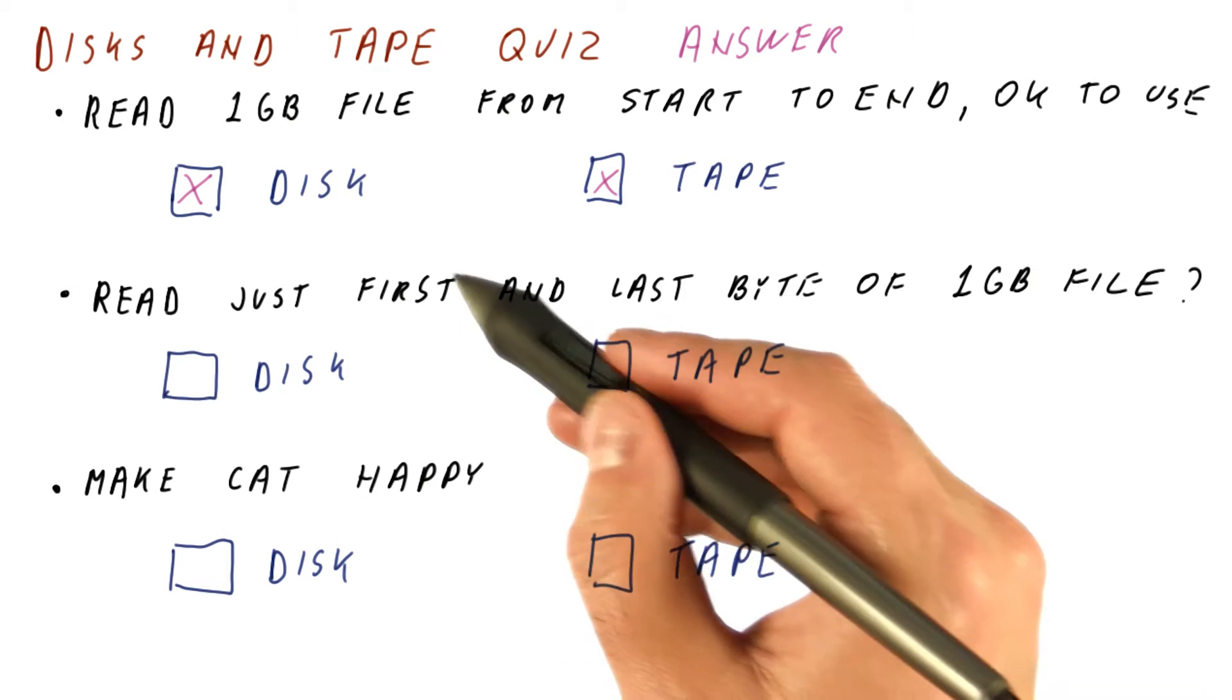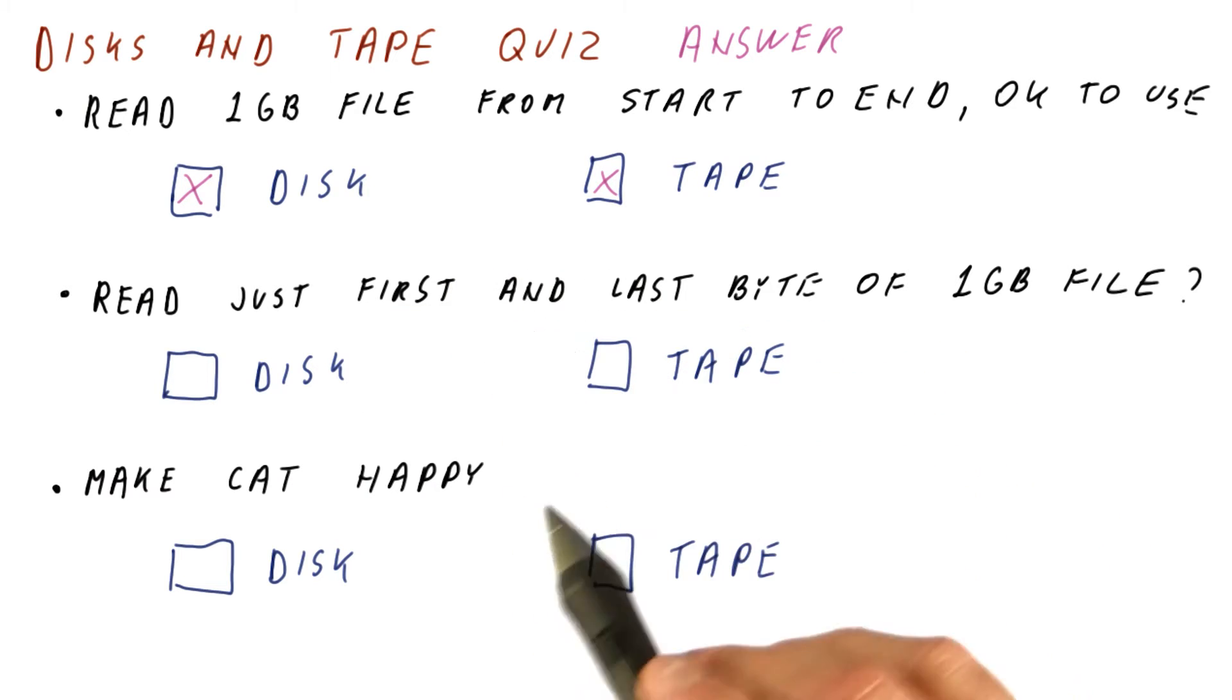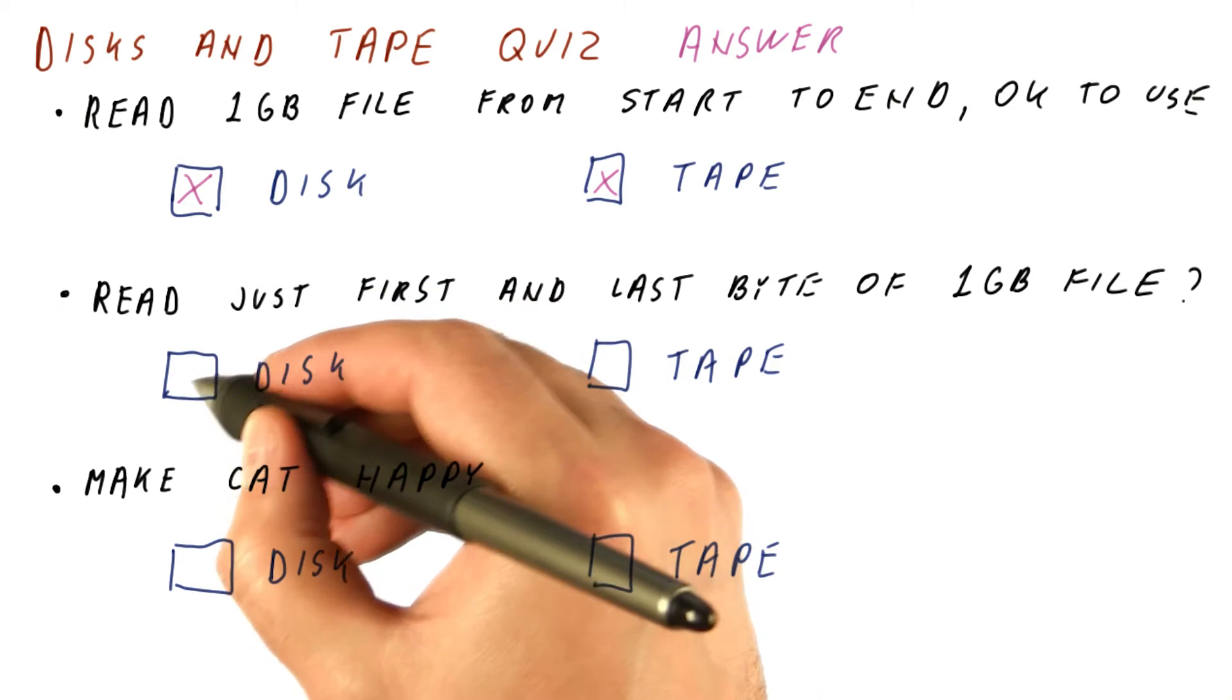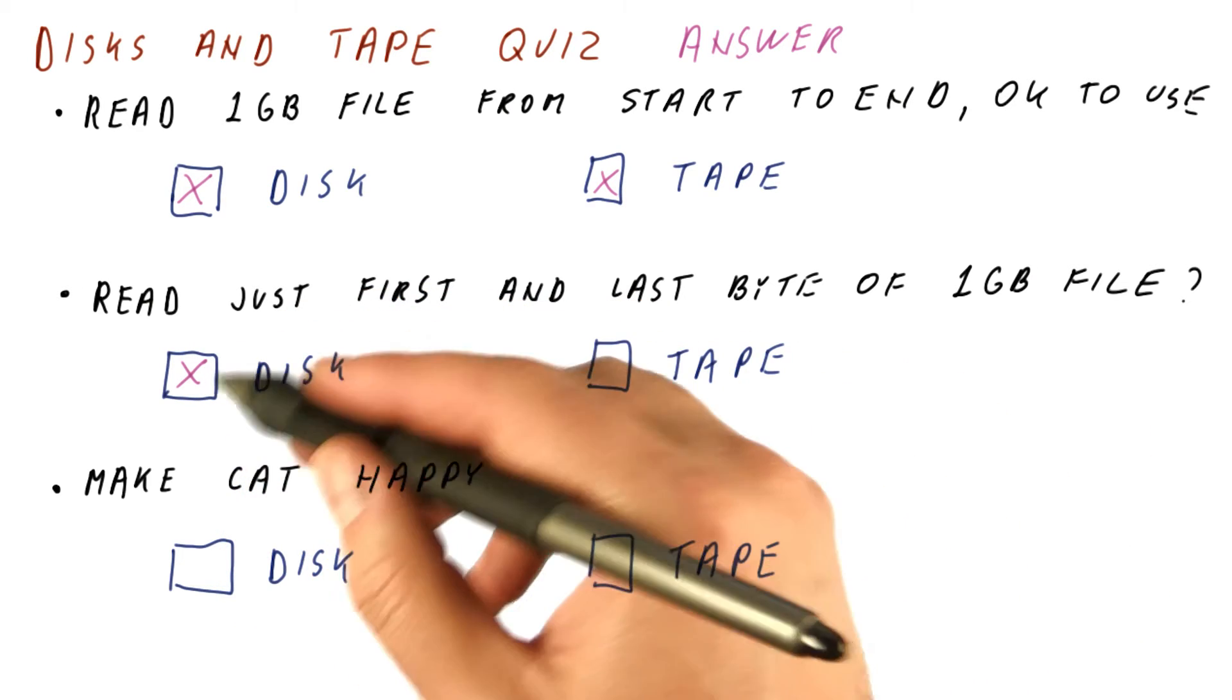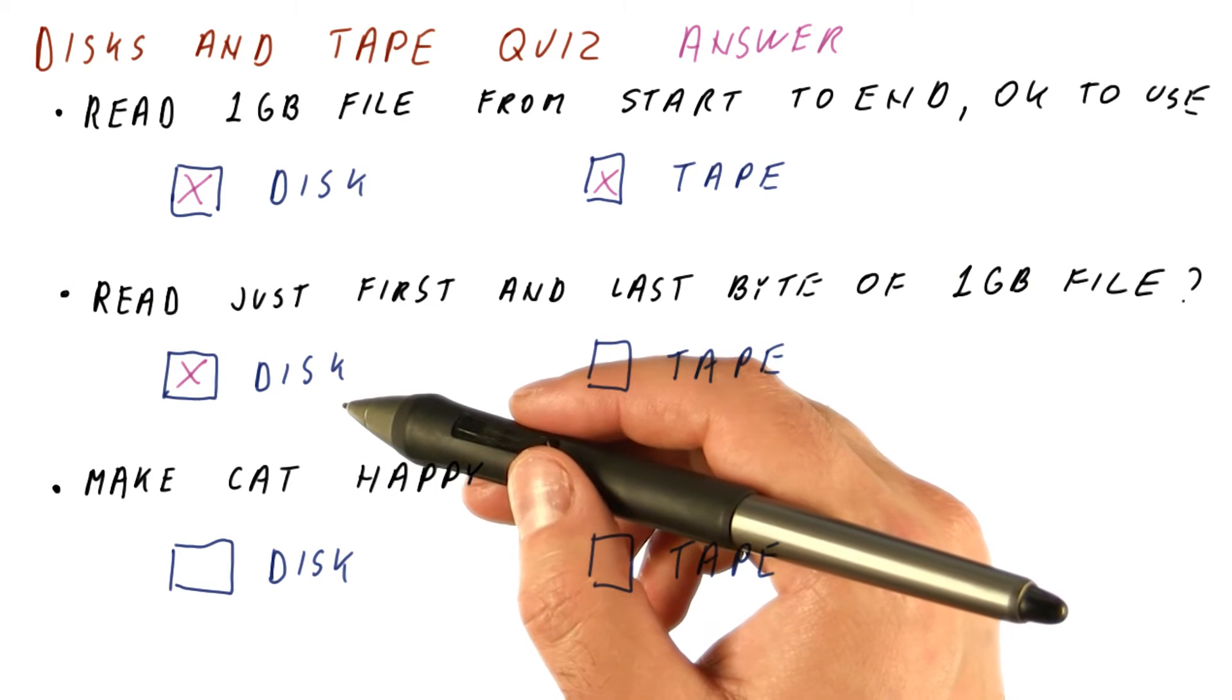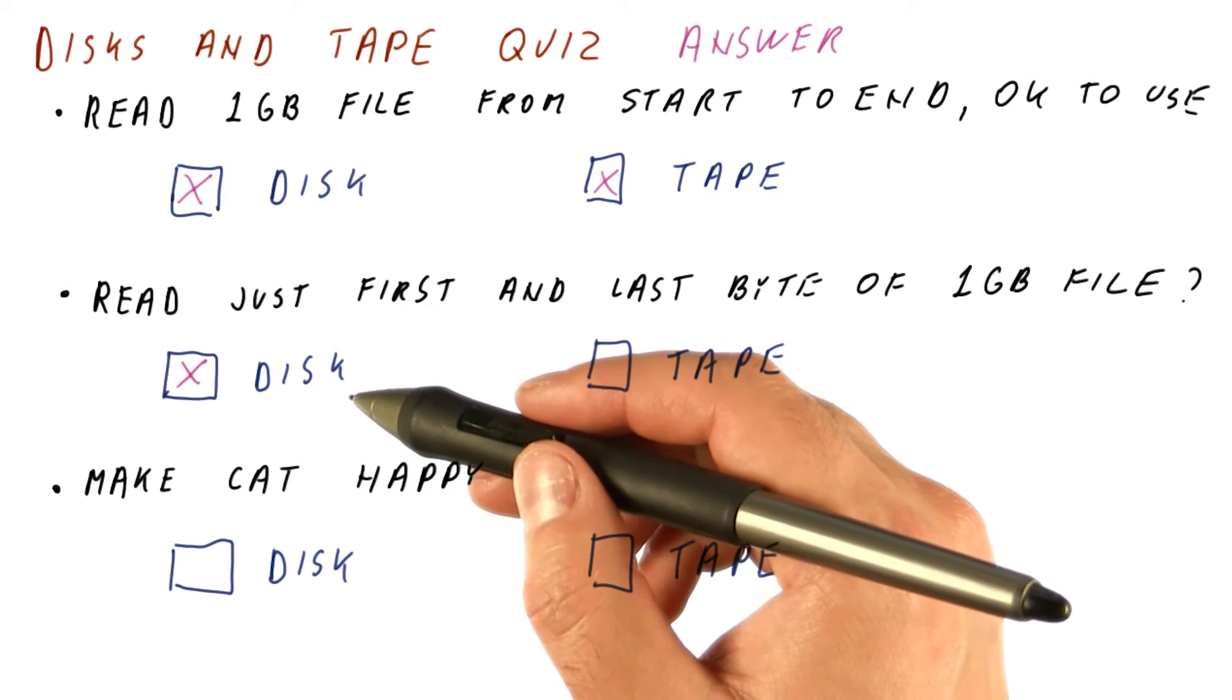Whereas on disk, we will seek to where the first and then where the last byte is and just read it. So disk will still work reasonably well here. Because the disk is a so-called random access medium, meaning we give it an address and it kind of goes there.